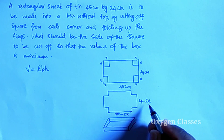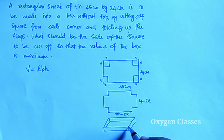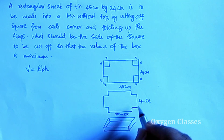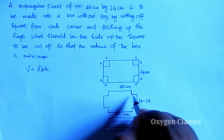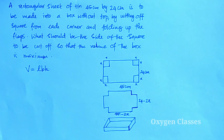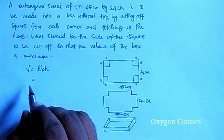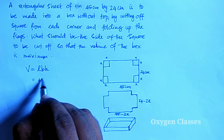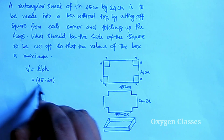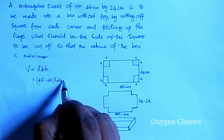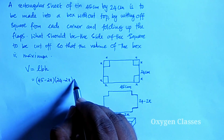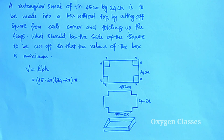The dimensions are: length = 45 minus 2x, width = 24 minus 2x, and height = x centimeters. So the total volume equation is V = (45 − 2x)(24 − 2x)(x). To maximize this volume, we differentiate.